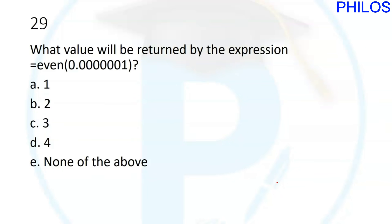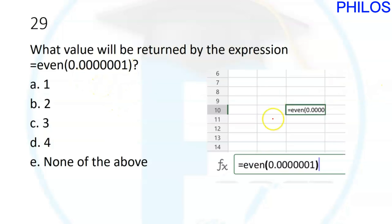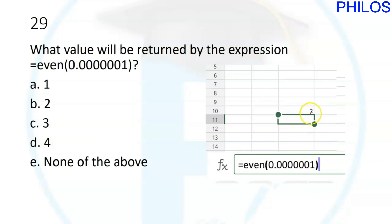Question twenty-nine: what value will be returned by =EVEN(0.0000001)? I entered it in my worksheet — EVEN rounds the argument up to the nearest whole even number. 0.0000001 rounds up to 2. The correct answer is B: 2.